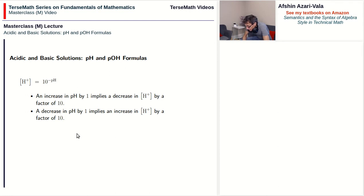So the most important thing to keep in mind is that a small change in pH means a large change in the concentration of H+ ions. Even a change of 1 in pH means the concentration of H+ either went up 10 times or down 10 times, depending on whether pH goes down or up. And if pH changes by 2, then the concentration of H+ changes by a factor of 100.